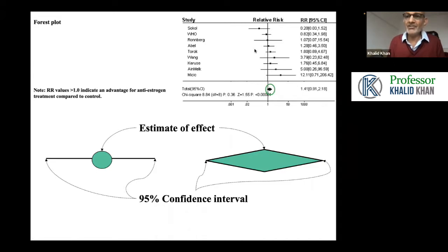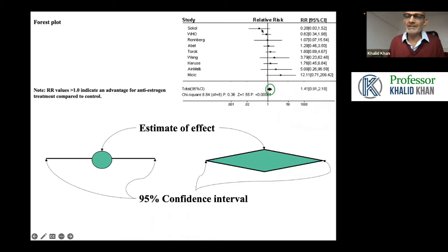What we have done in this diagram is that we have taken all the dots, given each dot a weight, and the weight depends on the width of the confidence interval. We have added all the dots weighted according to the width of the confidence interval, and the summary result when all these dots are put together is in this diamond. This is a meta-analysis.